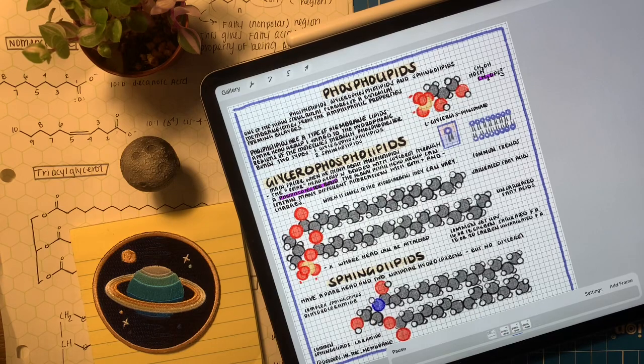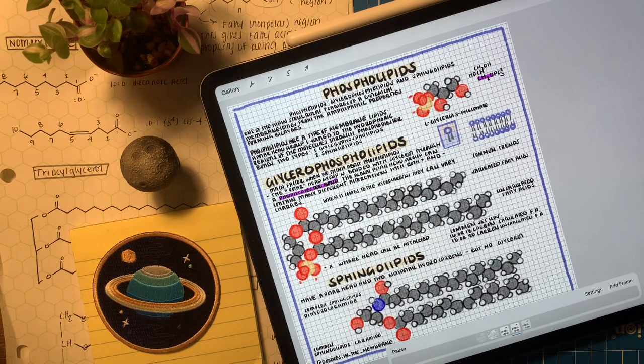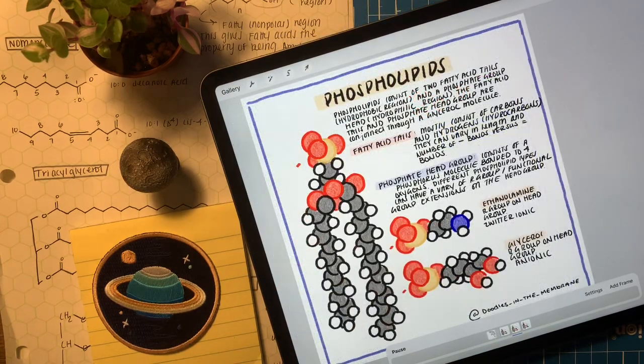Going back to glycerol phospholipids, we actually have that third position as a head group which can really be about anything, and this changes a lot of the properties of the phospholipid.